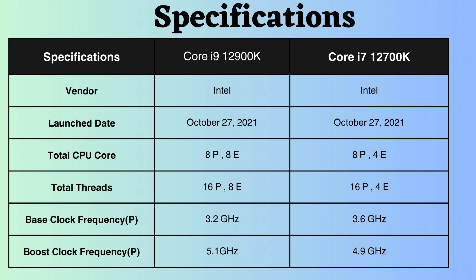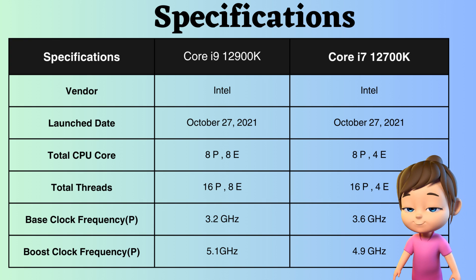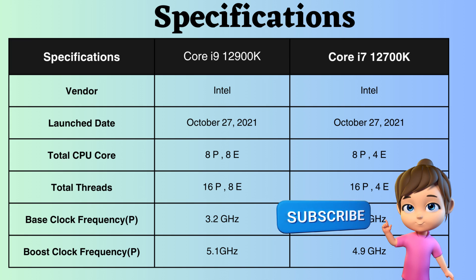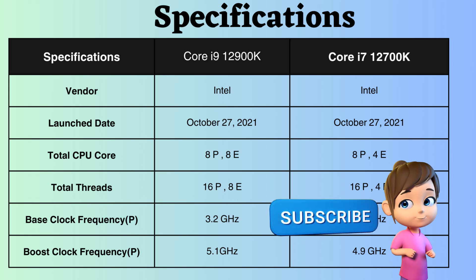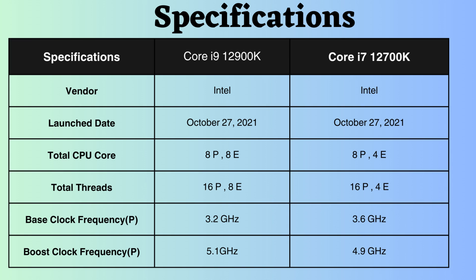The Core i9-12900K features 8 performance cores and 8 efficiency cores, while the Core i7-12700K has 8 performance cores and 4 efficiency cores. Additionally, the Core i9-12900K boasts 16 performance threads and 8 efficiency threads, whereas the Core i7-12700K has 16 performance threads and 4 efficiency threads. The increased number of cores and threads in the Core i9-12900K enables the processor to concurrently and effectively manage a greater number of tasks.